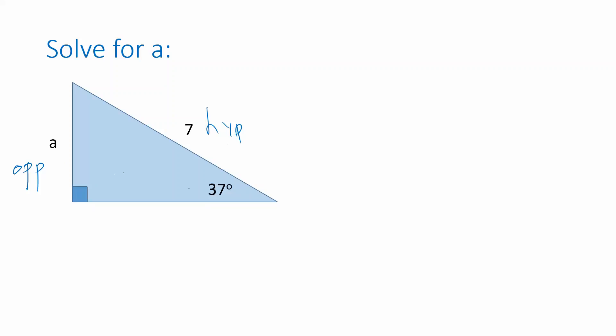Opposite and hypotenuse combine when we're looking at the sine function. We recall that sine is opposite over hypotenuse. If we use that here we can see that the opposite is A, the hypotenuse is 7, and that should be equal to the sine of 37 degrees.